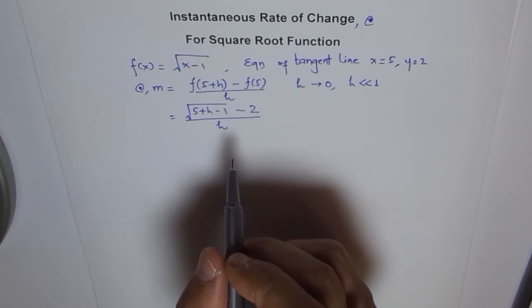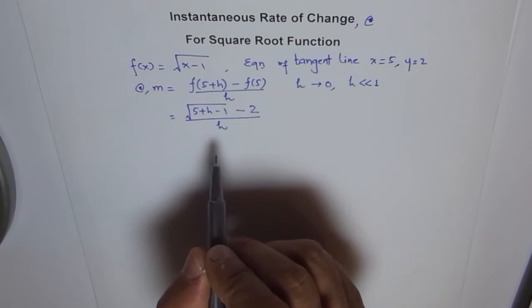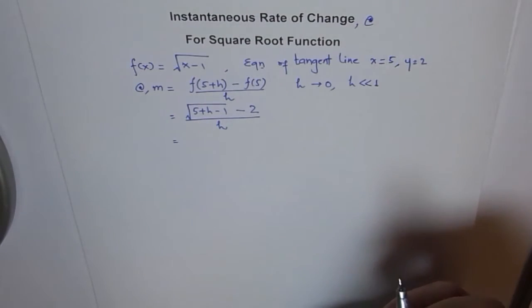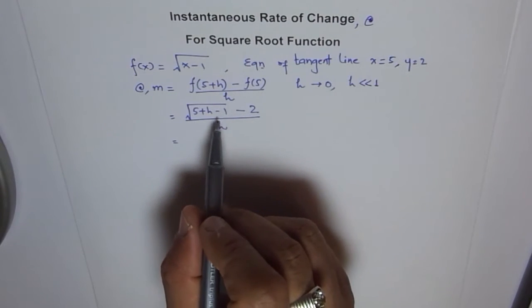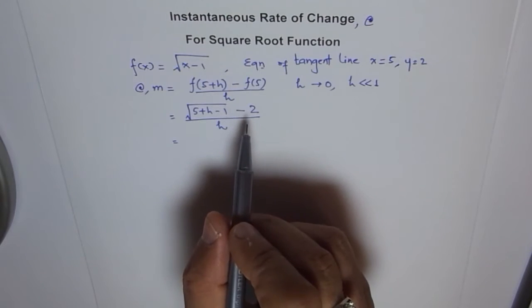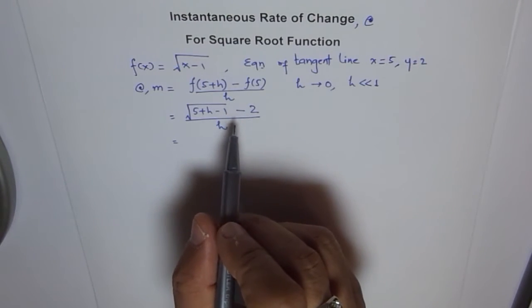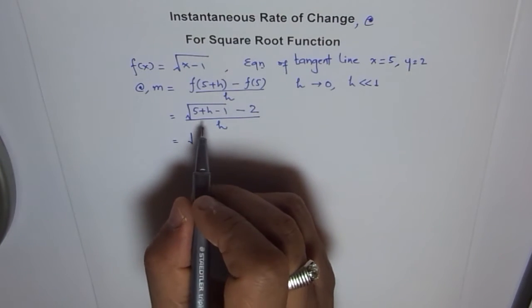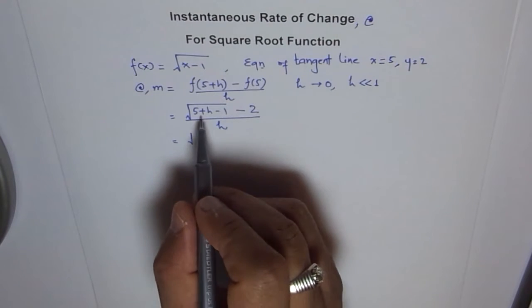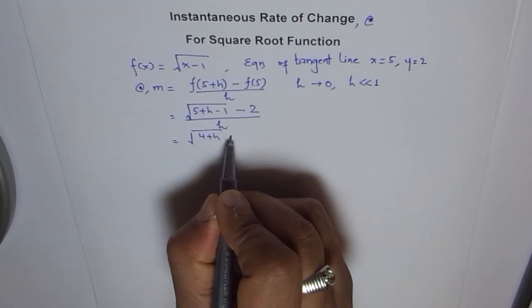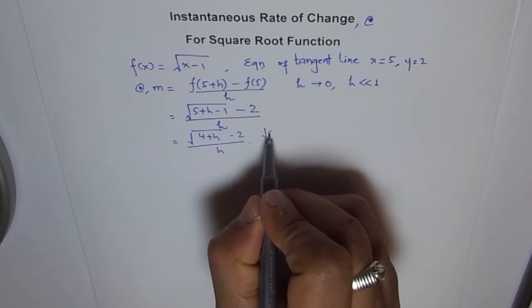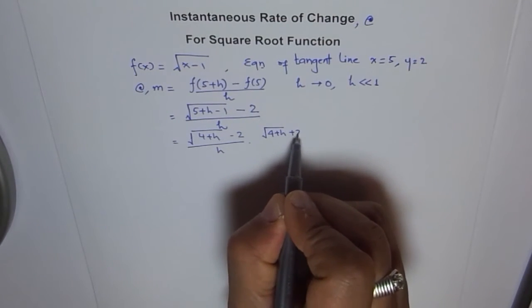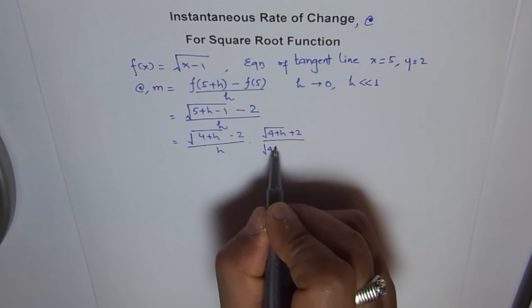So that becomes our instantaneous rate of change. Now whenever you have a square root like this, then what should you do to solve it? To solve such a thing, we need to rationalize. I hope you remember what is rationalization. Rationalization is like using product of sum and difference gives you difference of squares, using those things which we learned in factoring. So we will do that. I can write 5 minus 1 as 4, so I will write square root of 4+h minus 2 over h. And to rationalize it, I will multiply by conjugate of this. Conjugate of this is square root of 4+h plus 2, and divide by the same thing.